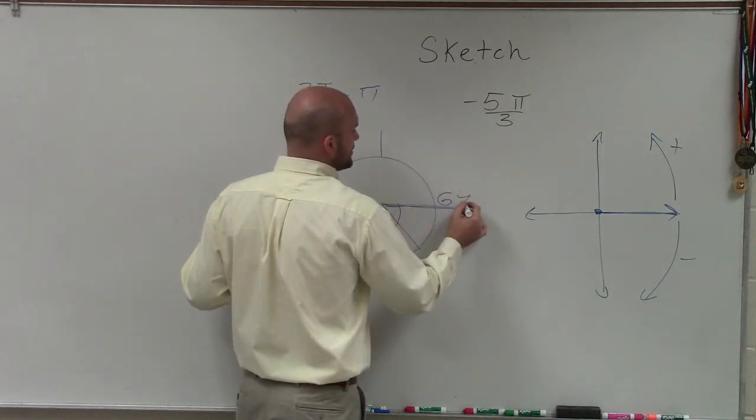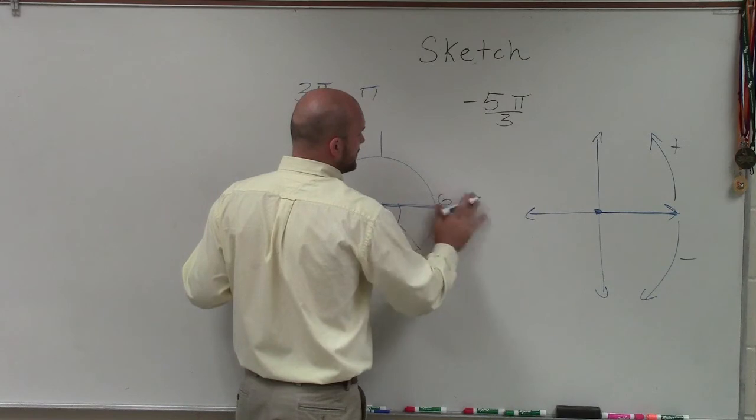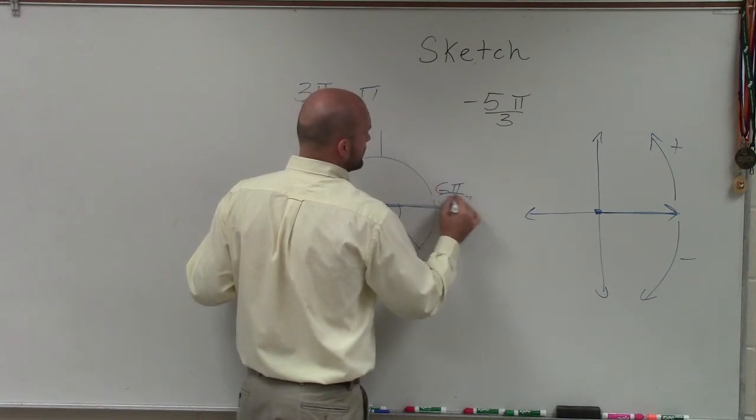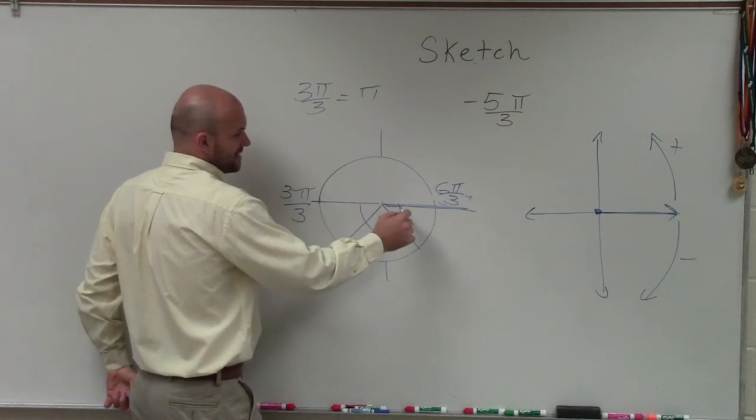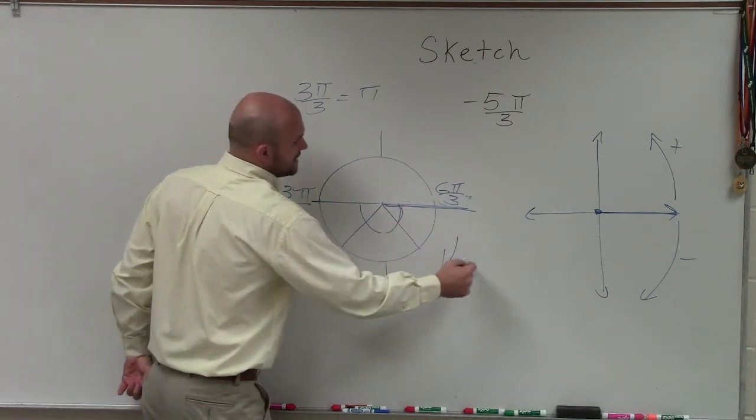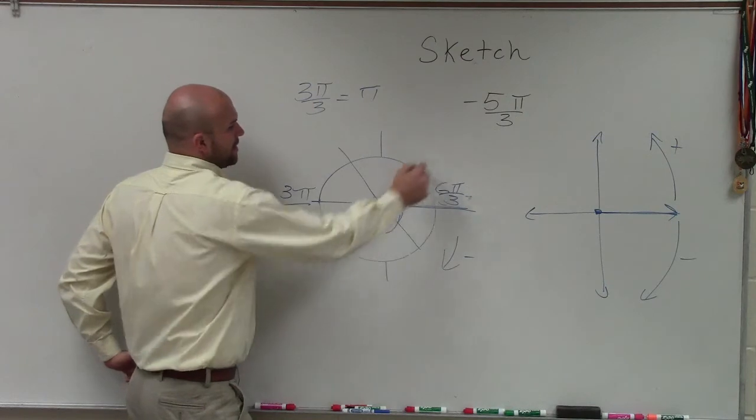in terms of a denominator of 3 is going to be 6π over 3. So if I start here and I rotate, and we're rotating in the negative direction, so I break this up into thirds as well.